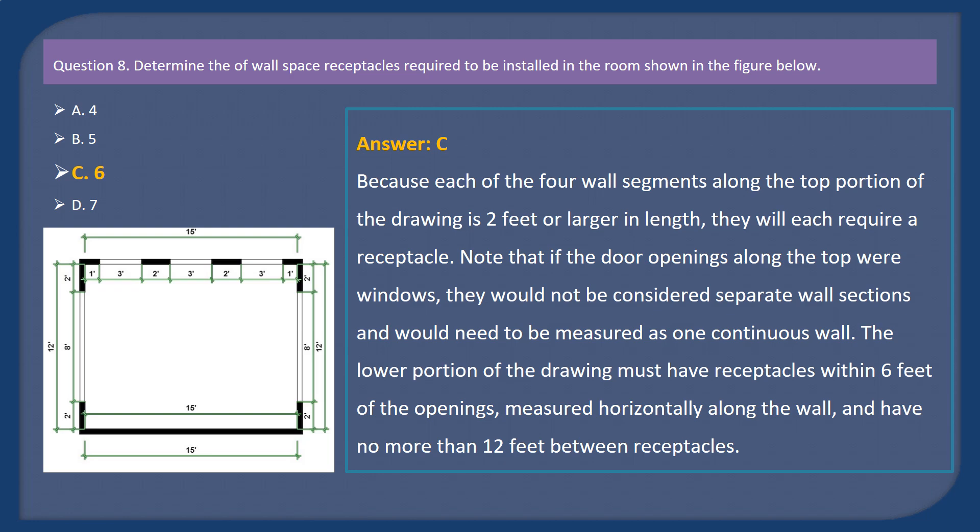Answer: C. Explanation. Because each of the four wall segments along the top portion of the drawing is 2 feet or larger in length, they will each require a receptacle. Note that if the door openings along the top were windows, they would not be considered separate wall sections and would need to be measured as one continuous wall. The lower portion of the drawing must have receptacles within 6 feet of the openings, measured horizontally along the wall, and have no more than 12 feet between receptacles.